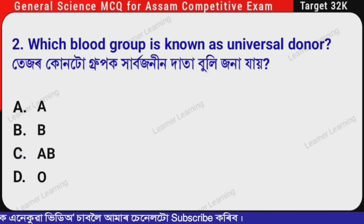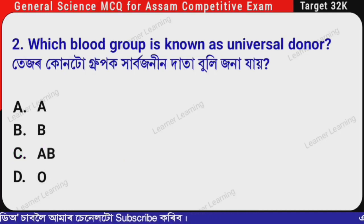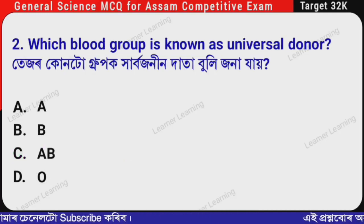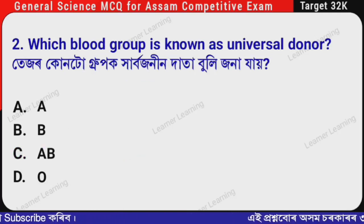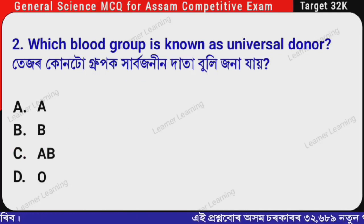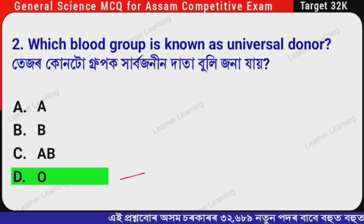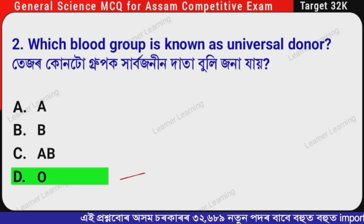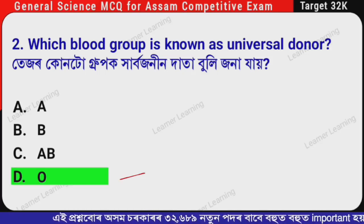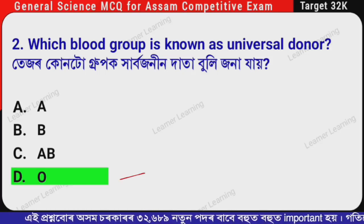Next question: Which blood group is known as universal donor? (Assamese: Teasar konto group ho gharbo zonin data buli jana jay?) The correct option is Option D — O group. The O group is known as the universal donor.